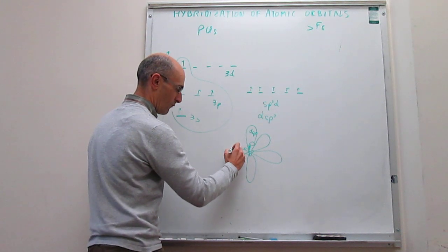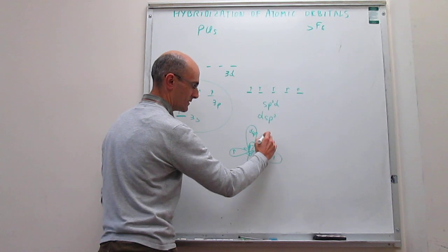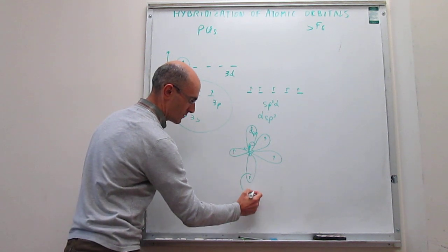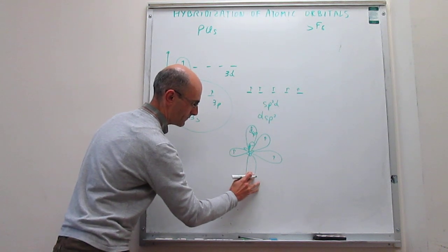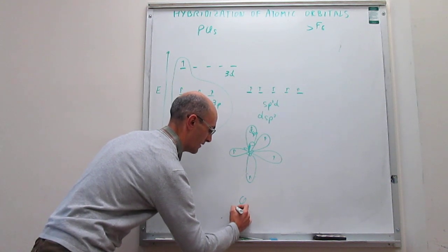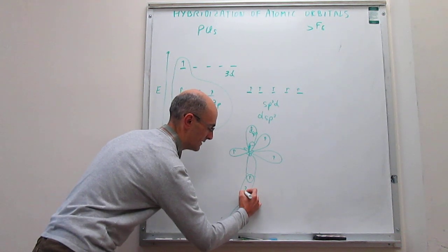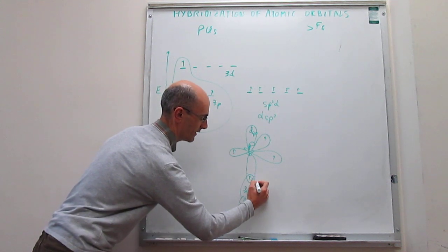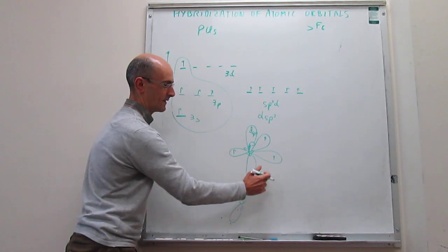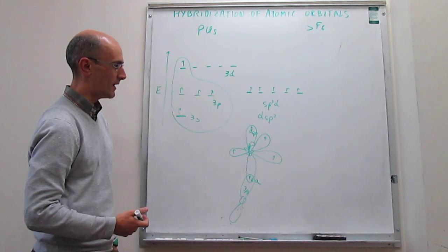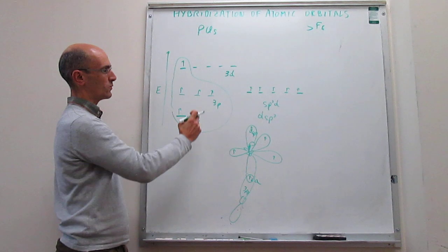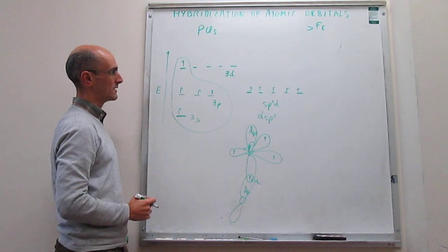With one electron in each one of these orbitals, we can understand how the bonding with chlorine forms phosphorus pentachloride. Each one of these sp3d orbitals binds with a singly-occupied 3p orbital of chlorine — for example, the 3pz of chlorine — to generate a sigma bond. That is your sp3d hybridization, which has the novelty of incorporating empty 3d orbitals that are close enough in energy to the 3s and 3p valence orbitals.